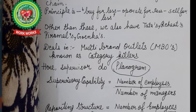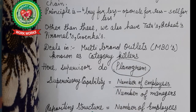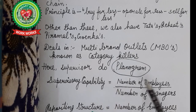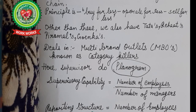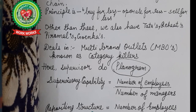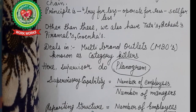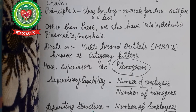Reliance Market deals in MBO — multi-brand outlets. Here, supervisors are called category killers. They are not just called supervisors; they are designated as category killers and they do planogram. Planogram means arranging a huge variety of products in different sections across different stores to make their display proper and for the convenience of customers.